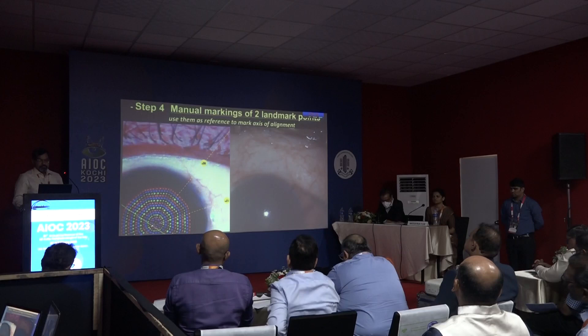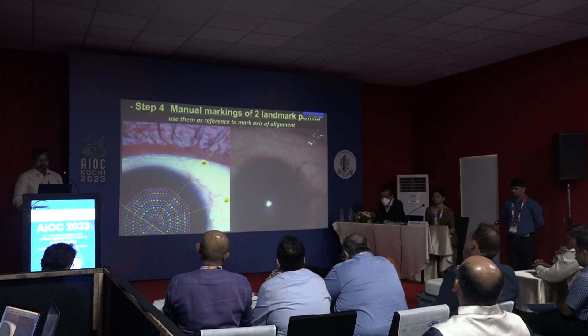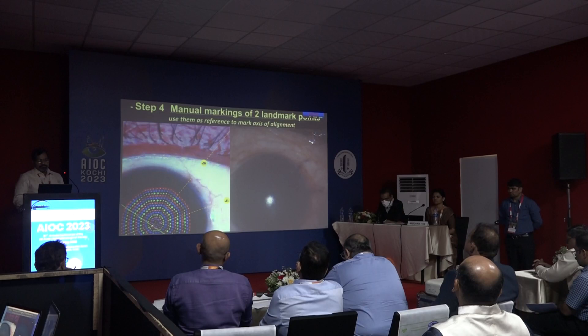Step 4: Manual marking of landmark points on the patient's eye by comparing the final topography picture under the microscope. Use the axis markings as reference to mark the axis of alignment of the toric lens.